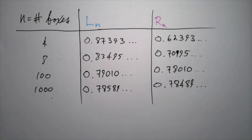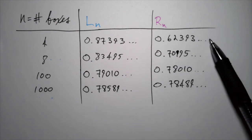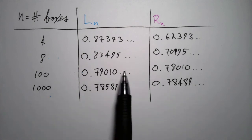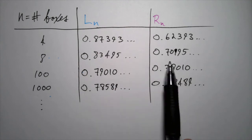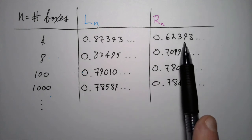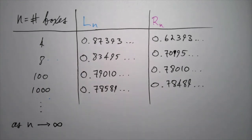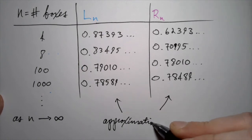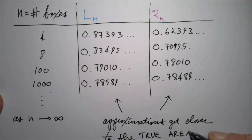Using those general formulas for the left and right-hand Riemann sums, I used a computer to make a bunch of these calculations. We did the case of n equals 4 boxes by hand and got those two numbers — an under-approximation and an over-approximation. With 8 boxes you get two closer numbers, with 100 boxes even closer, with 1000 boxes closer still. As you use more and more boxes, these numbers get closer together — the left values decrease and the right values increase — converging to the true area. This is a fantastic method for computing area.